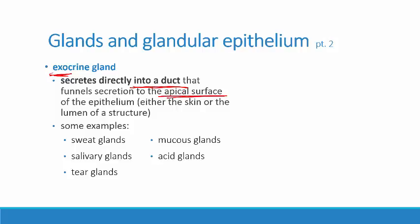There are some single-celled exocrine glands, and we still think of them as exocrine because when they release their secretions, they are released to the apical surface of whatever structure the epithelium is part of. Examples of exocrine glands include sweat glands on the skin, salivary glands delivering to apical surfaces inside the mouth, tear glands delivering to the eye surface, mucous glands lining the respiratory, digestive, and reproductive passageways, and acid glands associated with the stomach lining.